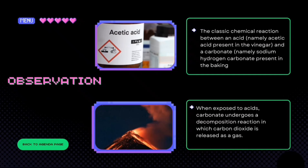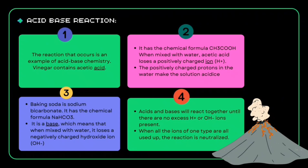When exposed to acid, carbonate undergoes a decomposition reaction in which carbon dioxide is released as a gas. For the acid-base reaction: first, the reaction is an example of acid-base chemistry. Vinegar contains acetic acid with the chemical formula CH3COOH. When mixed with water, acetic acid loses a positively charged ion, which is H+, and the positively charged protons make the solution become acidic. Third, baking soda is sodium bicarbonate with the chemical formula NaHCO3. It is a base, which means that when mixed with water, it releases a negatively charged hydroxide ion, which is OH-. Lastly, acid and base react together until there are no excess H+ or OH- ions present. When all the ions of one type are used up, the reaction is neutralized.